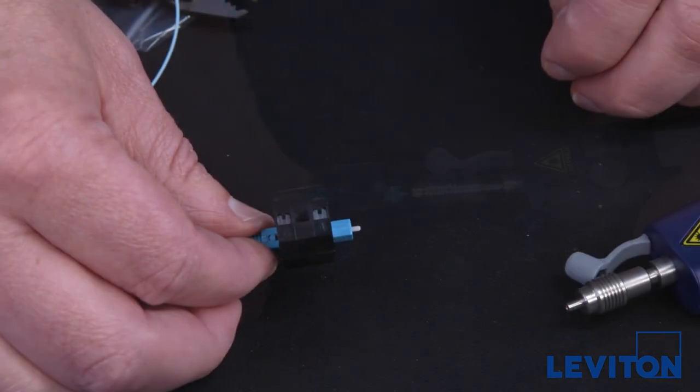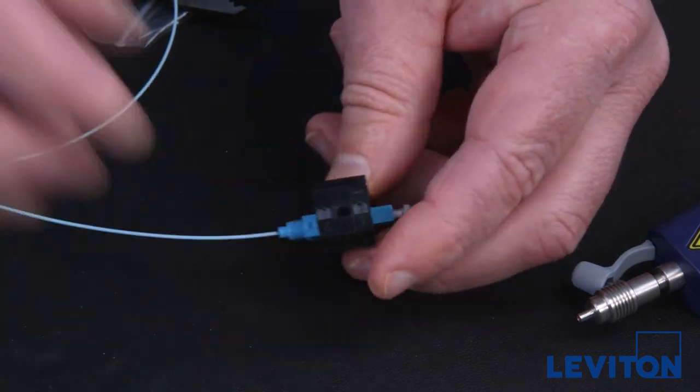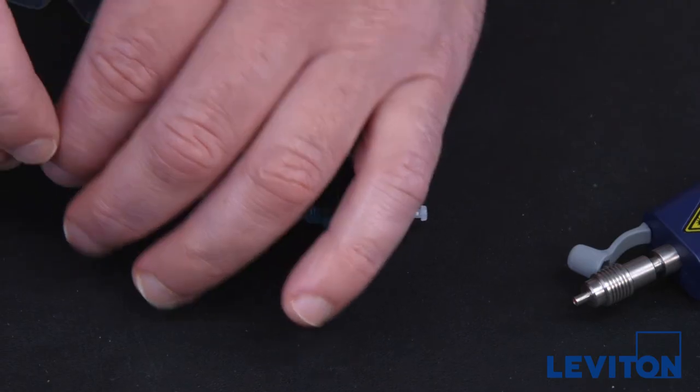Remove the connector from the visual fault locator and attach the protective cap. Slide the boot up and twist it onto the connector housing.